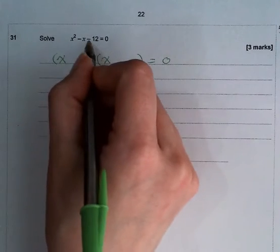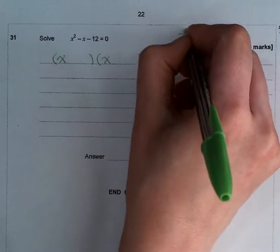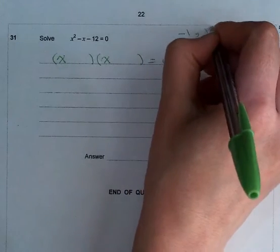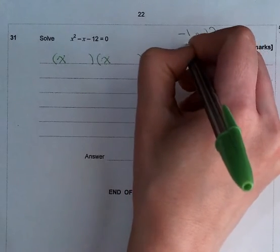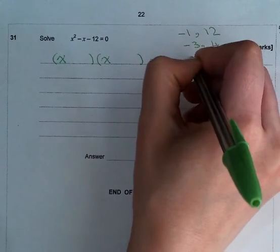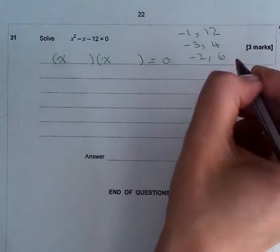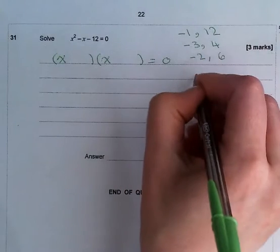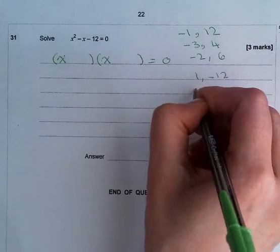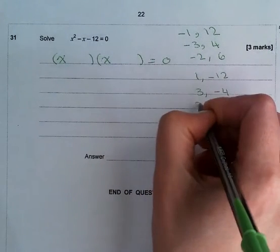And minus 12, it's either -1 multiplied by 12, or -3 multiplied by 4, or -2 multiplied by 6, or we could say 1 and -12, 3 and -4, 2 and -6.